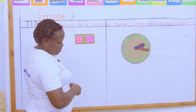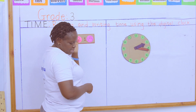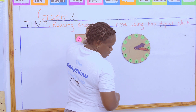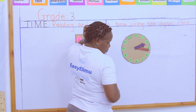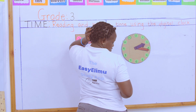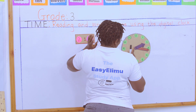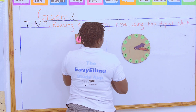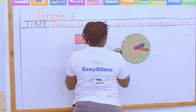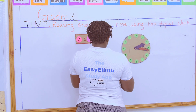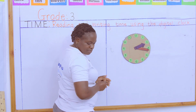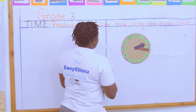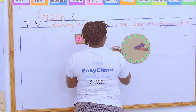I'm told, now represent your time — it is quarter to three. Two is on this side. This is two.